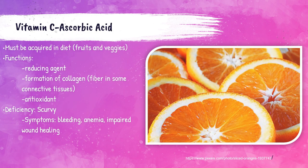Vitamin C, or ascorbic acid, is acquired from fruits and vegetables in a patient's diet. It's most commonly associated with oranges. It acts as an antioxidant and helps with the formation of collagen fibers. Scurvy is a disorder that is caused by a deficiency of vitamin C. Symptoms include bleeding, anemia, and impaired healing of wounds.